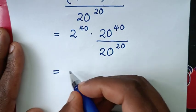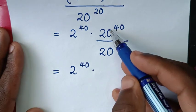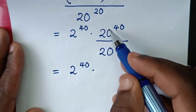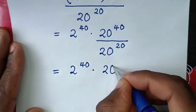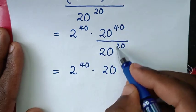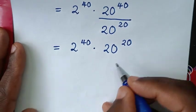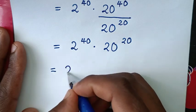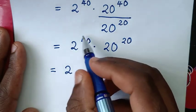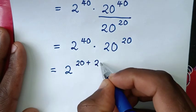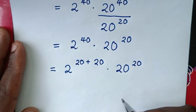This leaves us with 2 power of 40 times a division of exponents with the same base but different powers. We write the same base of 20, then subtract the powers: 40 minus 20 equals 20, giving 20 power of 20. So we have 2 power of 40 times 20 power of 20. To simplify 2 power of 40, we write 40 as 20 plus 20.